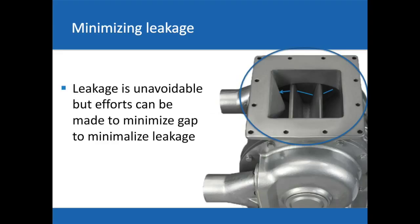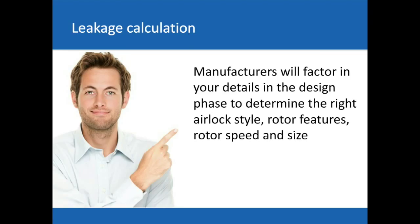Minimizing air leakage. As I said, 'airlock' is not the greatest term — leakage is unavoidable. However, efforts can be made to minimize the gap or clearance within the rotor housing and end plates. Leakage calculations: the right manufacturer will factor in your details during the design phase and determine the right airlock style, rotor features, and rotor speed. This would be a valve matrix system.